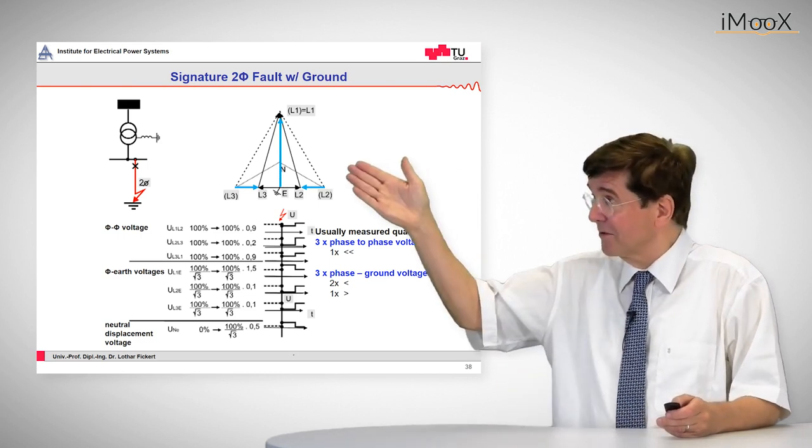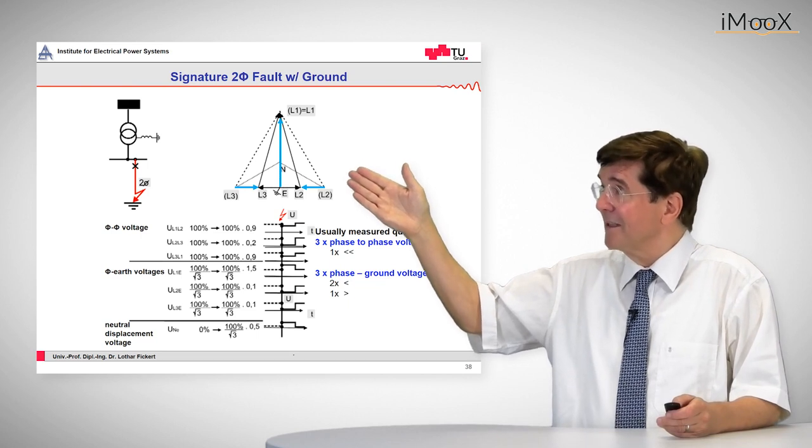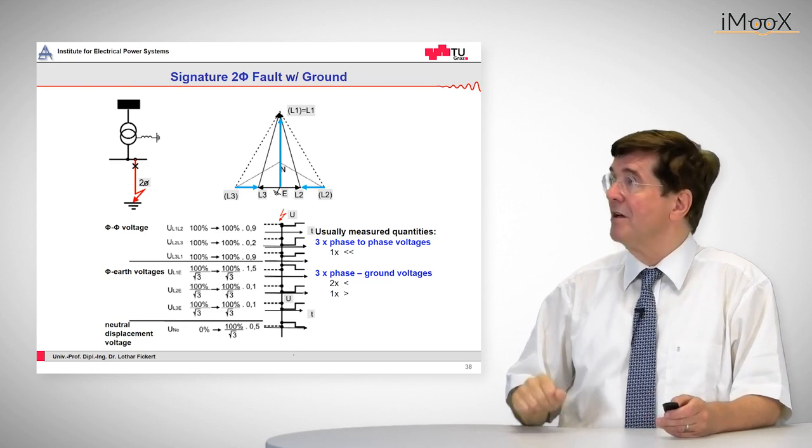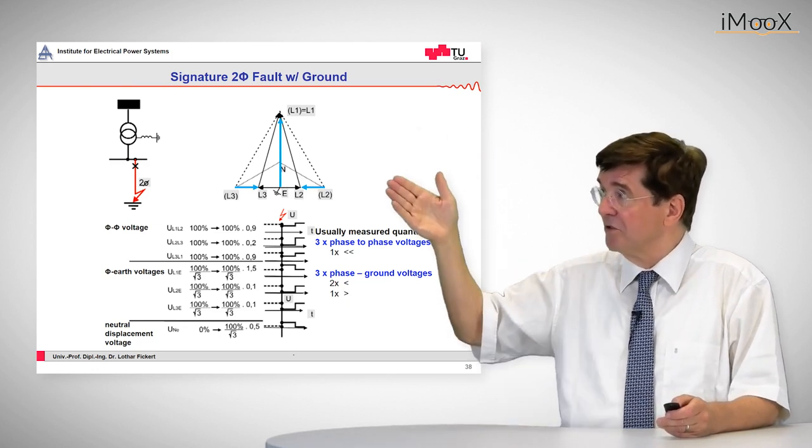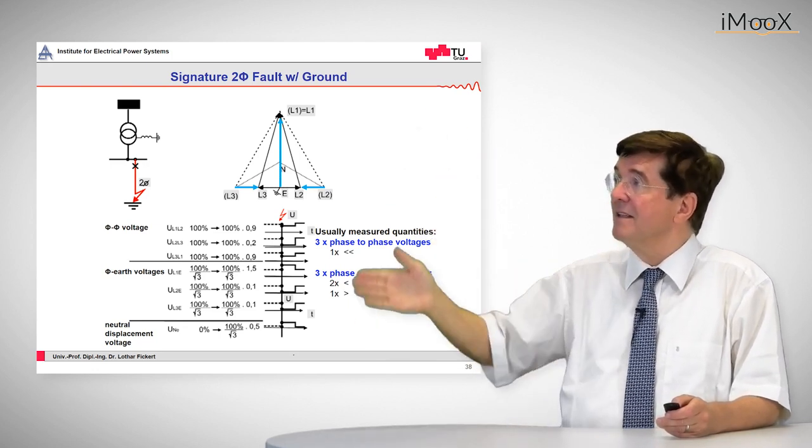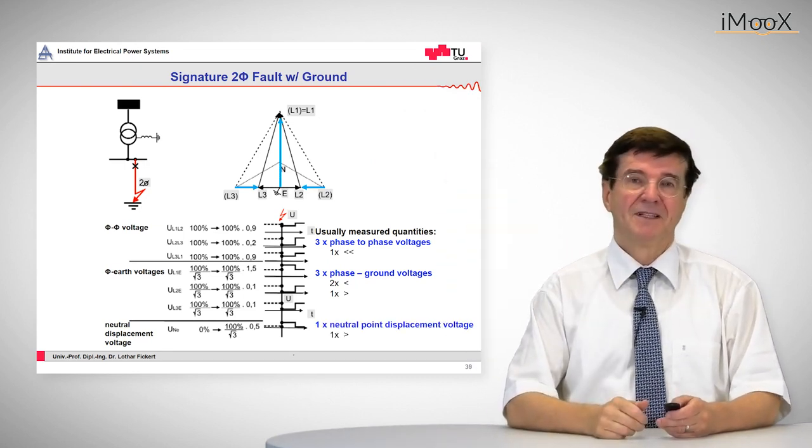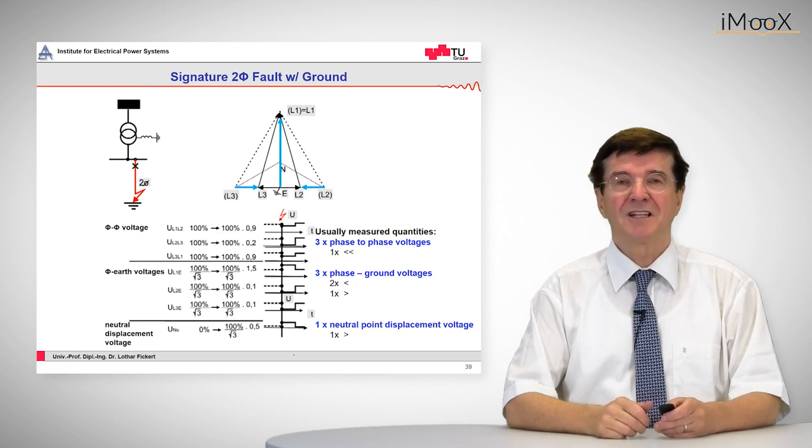The reason is when we look into the voltage triangle that before the fault the line to ground voltage in L1 was L1 to neutral and now this has risen up by 50%. And here for the first time we have the appearance of neutral point displacement voltage,